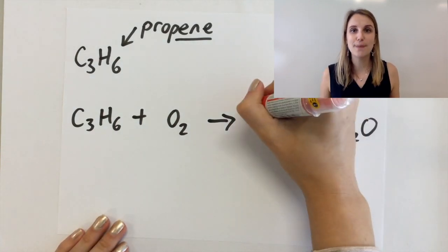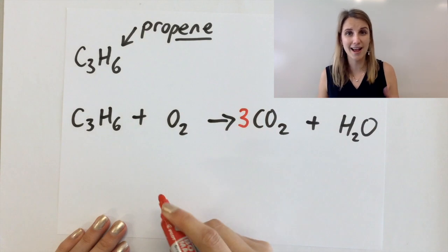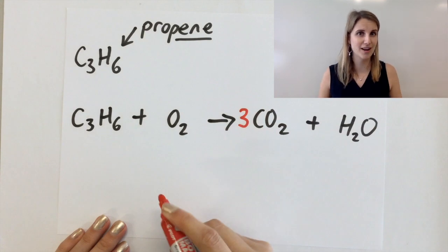So step one is balance the carbons out so now that means I need three on the right hand side to balance the three on the left.